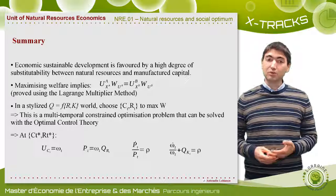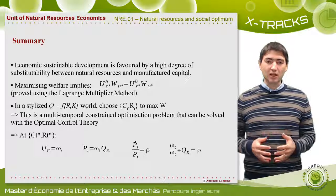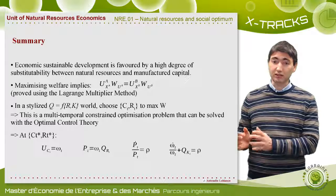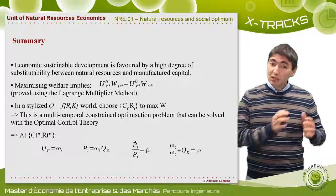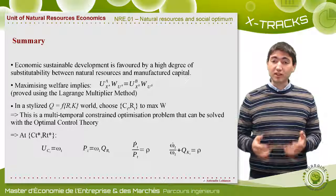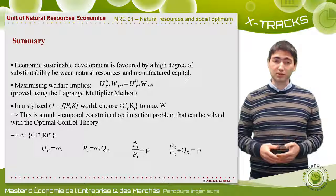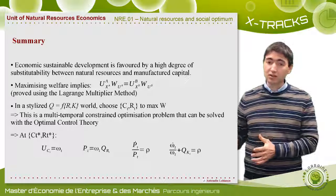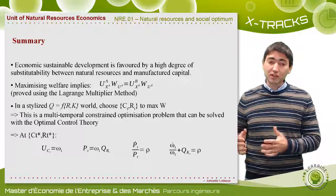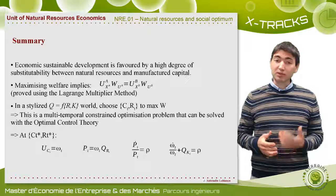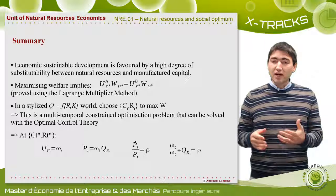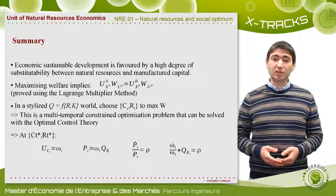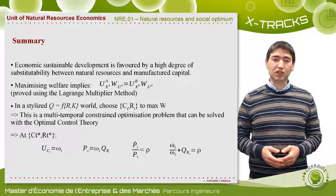We obtained two important results. At the optimal level, at each moment in time, the marginal benefits related with a choice variable must be equal to the marginal cost — and we call these static efficiency conditions. Using an output for consumption rather than adding it to the capital stock generates a marginal benefit in terms of utility, that is U_c, but we give up the value that such output would have as part of the capital stock, that is omega, the shadow price of capital.